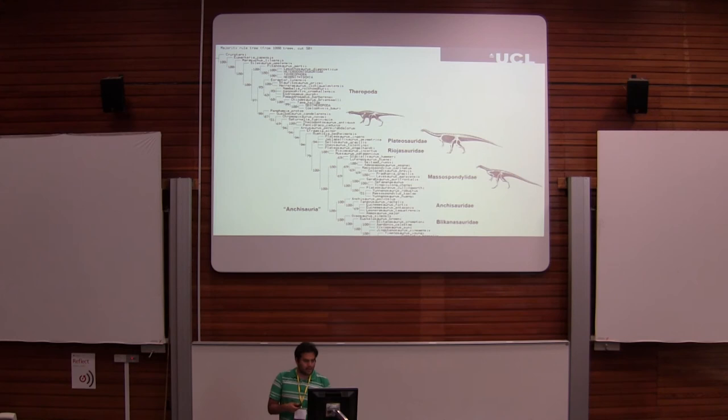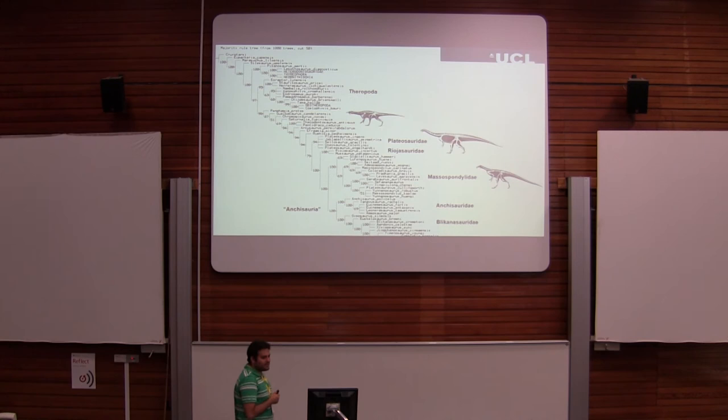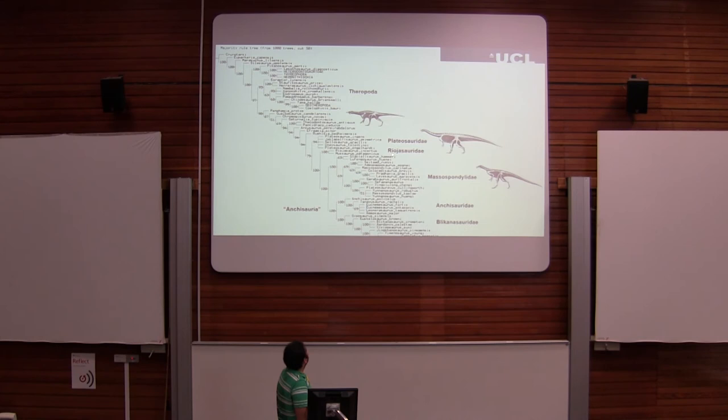Moving on to my results, I'm showing two results. The first is the majority rule tree, which is the nicer one. It shows how often certain clades appear — this is done after 1,000 most parsimonious trees, so it's fairly robust for a majority rule consensus.